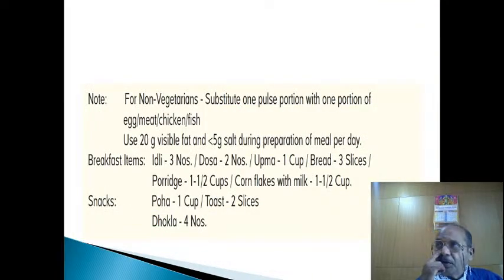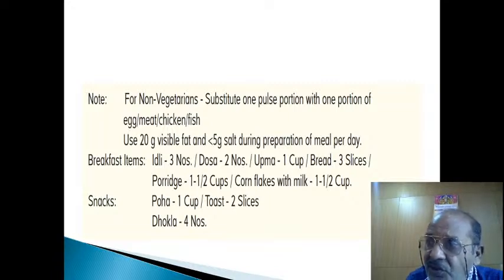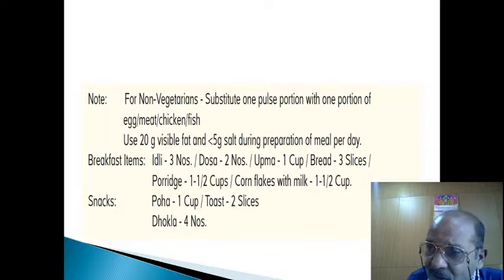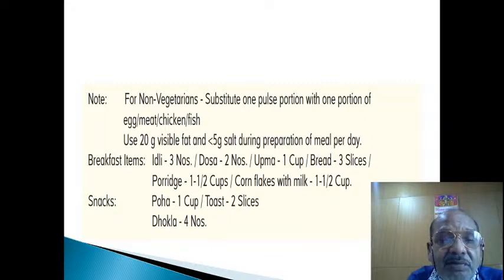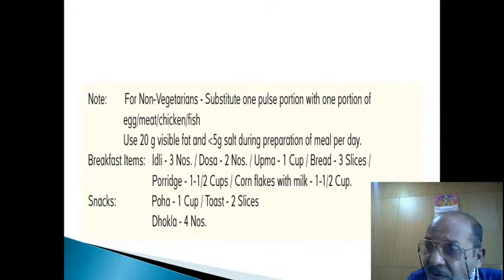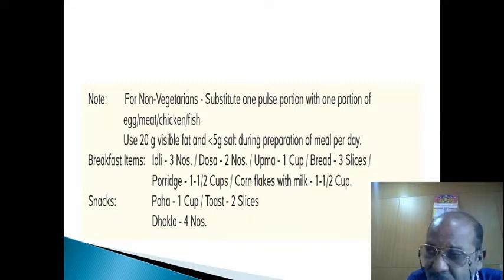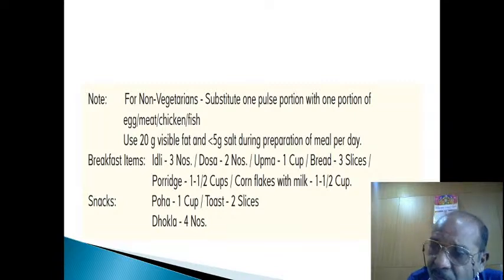Some amount of vegetables should also be consumed as salad, because salads give you antioxidants. For non-vegetarians, substitute one pulse portion — half a cup, that is 30 grams — with one portion of egg, meat, chicken, or fish. Use 20 grams of visible fat and less than 5 grams of salt during preparation of meals per day. Five grams is one teaspoon of salt throughout the day. Twenty grams of visible fat may include oils.